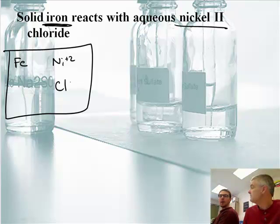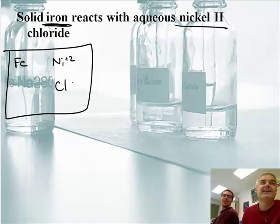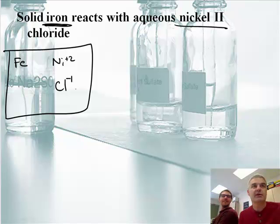Those of you copying your worksheets — you know how I know? When you don't know what the Roman numeral indicates: the charge! It's the charge. And Cl has a charge of minus one from the periodic table.